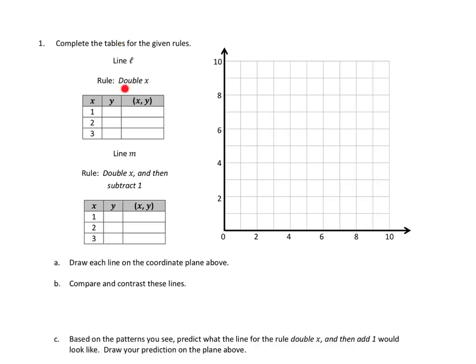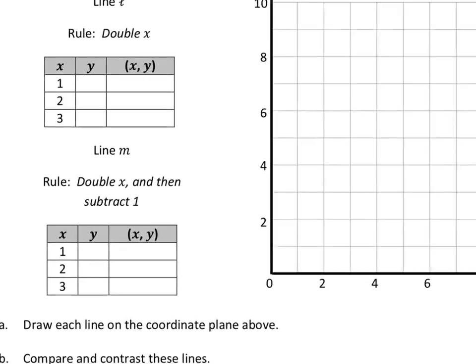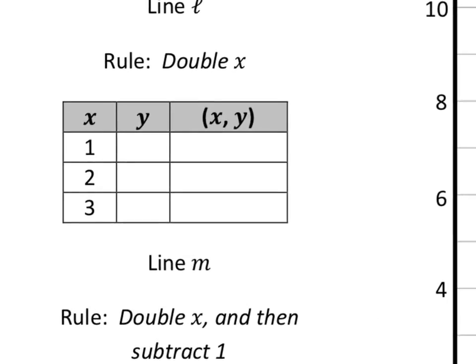Line L. What is line L? Well, the rule is double the x. Okay, I'm going to zoom in here because I can't fit my texting otherwise. Let's double x. So when x is 1, we're going to double x. That would mean that y is 2, so that would give us a coordinate pair of 1, 2.